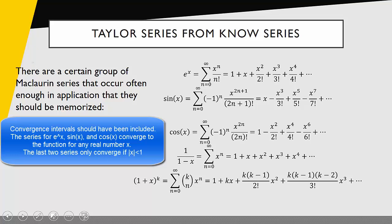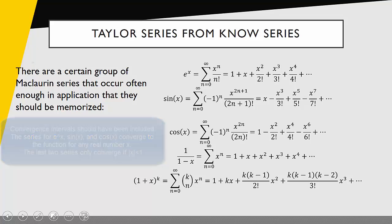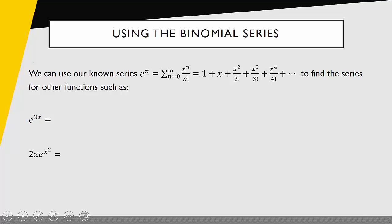What we're going to do with these series is use them to find the Taylor series for related functions. For example, if we know that the series for e to the x is 1 plus x plus x squared over 2 factorial plus so on, then we can find the Taylor series for e to the 3x simply by replacing x with 3x. It's the same substitution technique we use when talking about general power series.